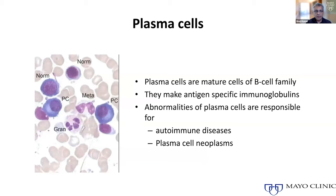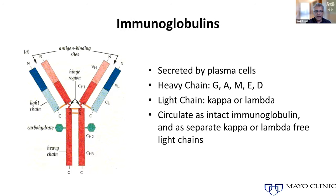Starting with monoclonal gammopathy: plasma cells are mature white cells of the B cell family, and they have a very important function — making antibodies or immunoglobulins to help us fight infections. Abnormalities of the plasma cells can lead to a variety of different disorders. Today we're focusing on the malignant transformation or abnormality in the plasma cell that leads them to proliferate or divide in an uncontrolled fashion, leading to the spectrum of monoclonal gammopathy.